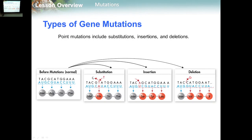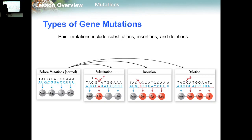There are three types of point mutation: substitution, insertion, or deletion. These are the three types of point mutation, which is one category of gene mutation.